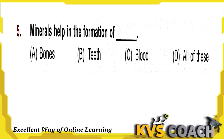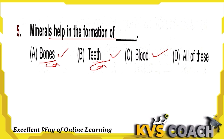Question 5: Minerals help in the formation of what in our body? Bones — yes, calcium mineral helps in the formation of bones. Teeth — yes, teeth enamel is also made by calcium. Blood — we need iron and potassium for the formation of blood. So all of these can be formed by minerals. Option D is the right answer.